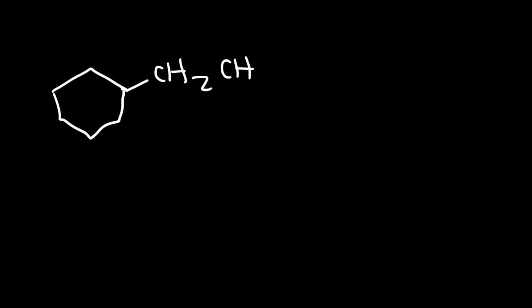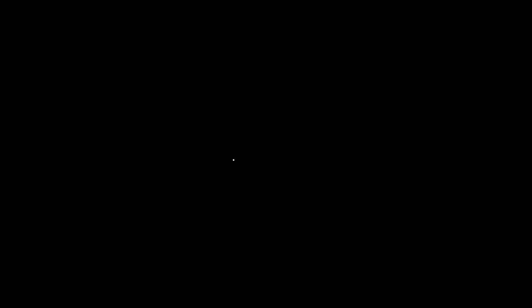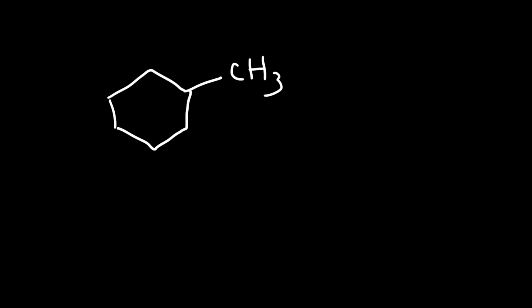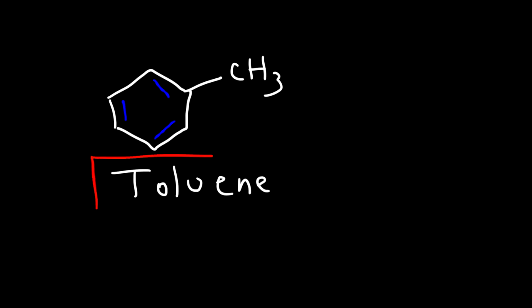What if we have an ethyl group attached to a benzene ring? This is simply called ethylbenzene. And what if we have a methyl group? We could say methylbenzene, but this one has a common name you need to know — it's called toluene. Make sure you know this common name.